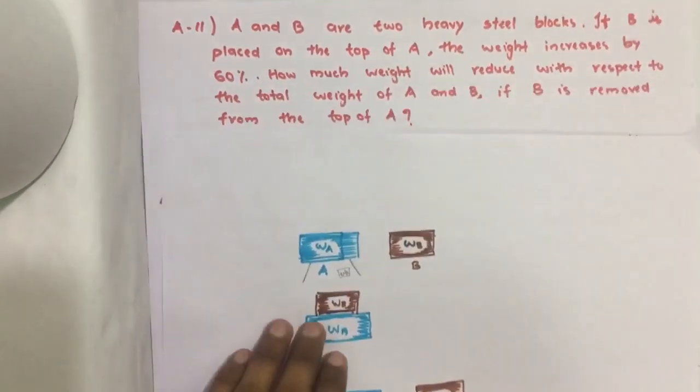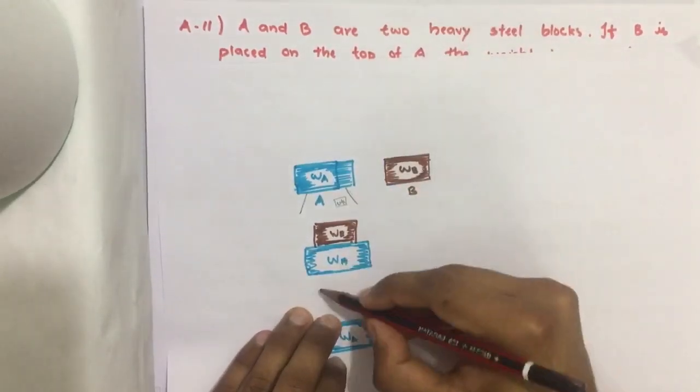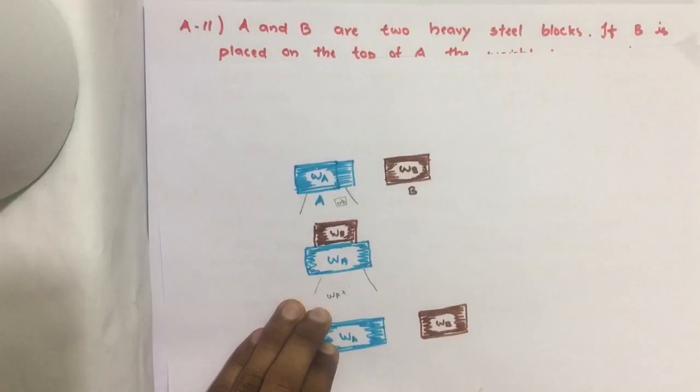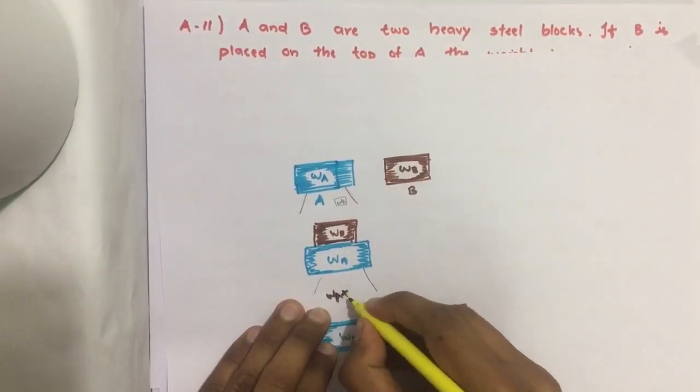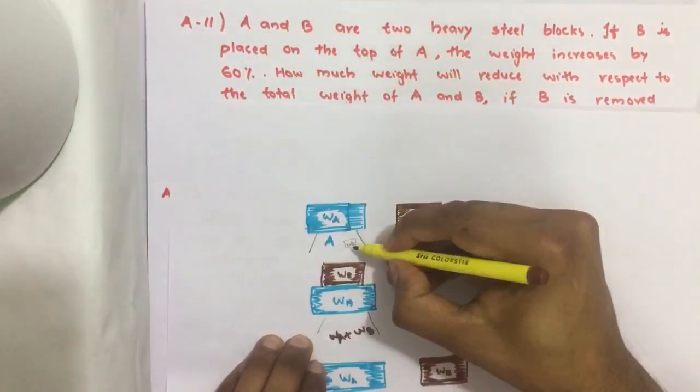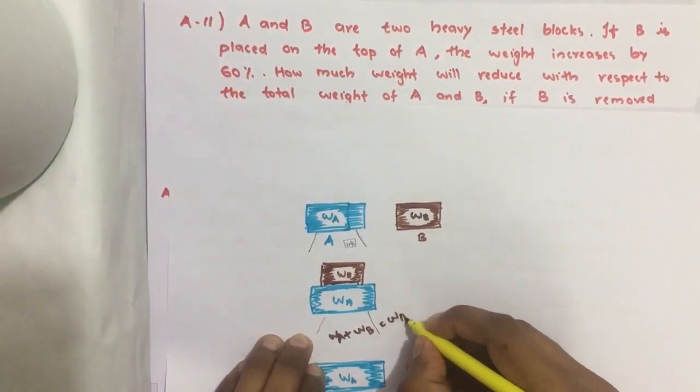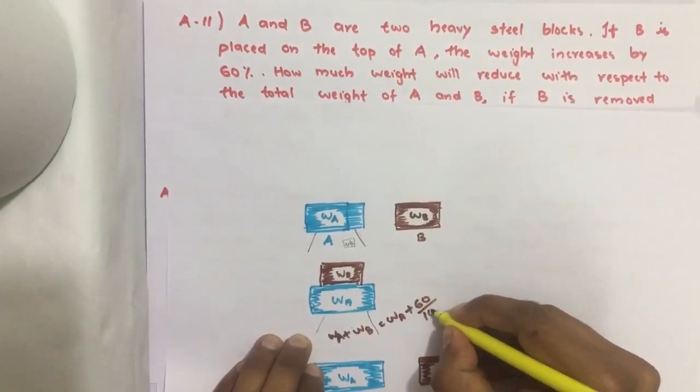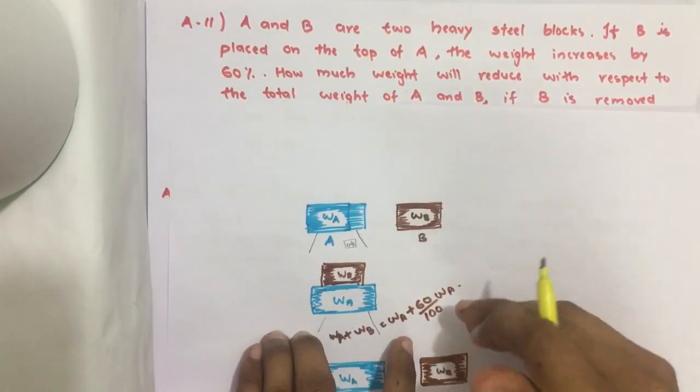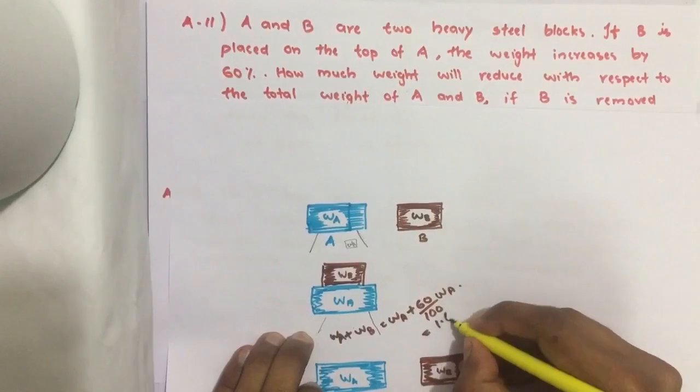If B is placed on the top of A, we place this B block on the top of A. Then the weighing machine will show total weight WA plus WB. It is given that the weight increases by 60%. Earlier it was WA, now the weight is increased by 60%. You can write 60% of weight WA. This is equal to 1.6 WA.